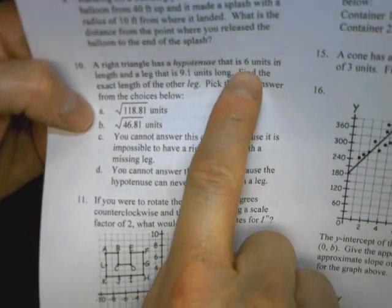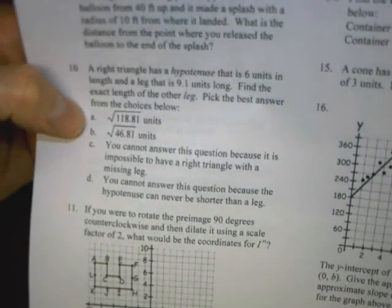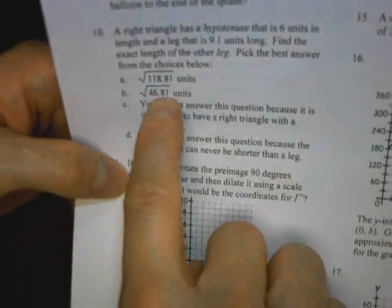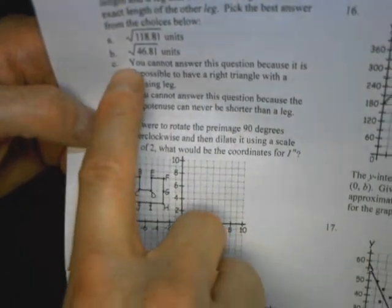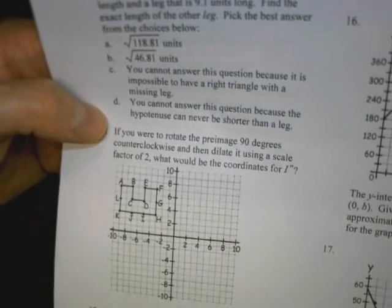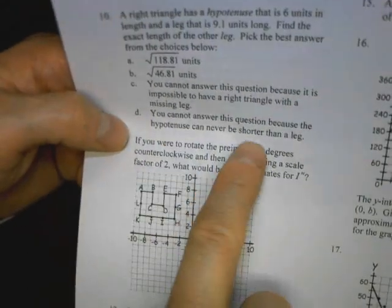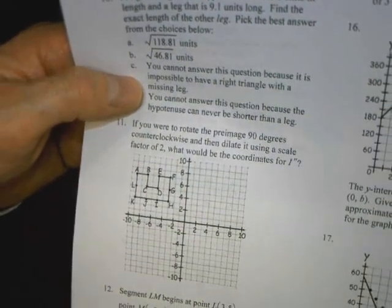So let's take a look. First of all, hypotenuse has to be the longest side, doesn't it? So this is not possible. You can't have a hypotenuse of 6 and a leg of 9.1. That's a trick question. So we go down here. None of A and B can't work because that's saying that you can answer it, which you cannot. But you've got to be careful because there's two that say you cannot answer it. You have to pick the right one. So the reason you can't answer this is because the hypotenuse can't be shorter and has nothing to do with C. So don't pick C on the test for that one.